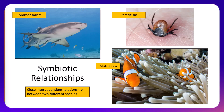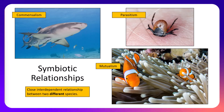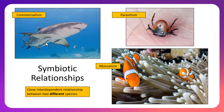Looking at our commensalism example, we have a shark swimming and underneath it are some fish. These fish feed on basically the leftover scraps and bits that fall out of the shark's mouth. So the benefiting organism would be the fish, and the sharks are pretty much unaffected by those fish existing and swimming around them. They're simply just trying to get food bits that the shark isn't utilizing.